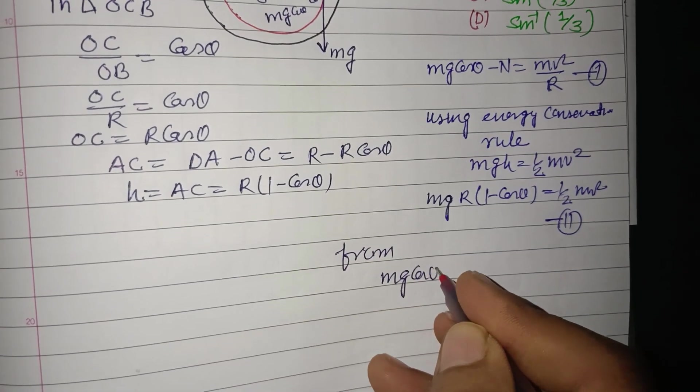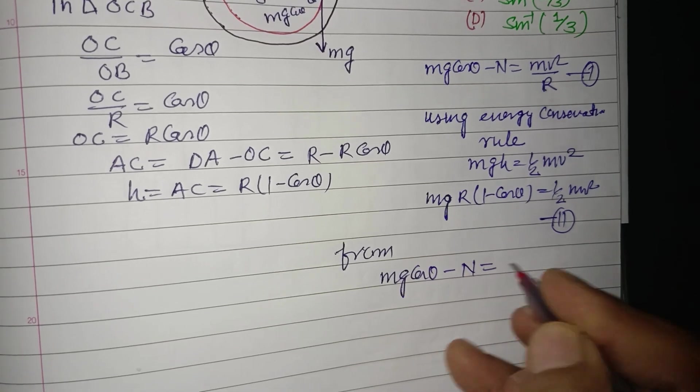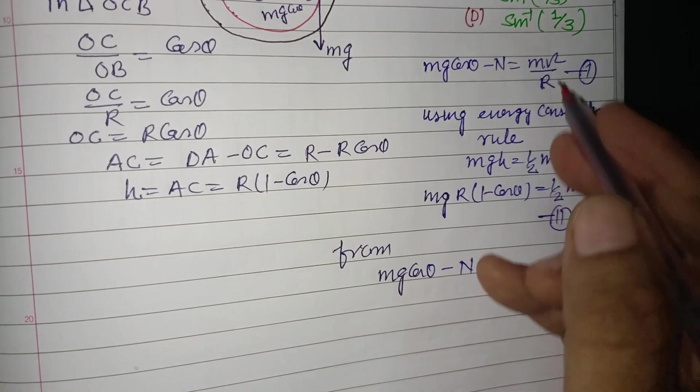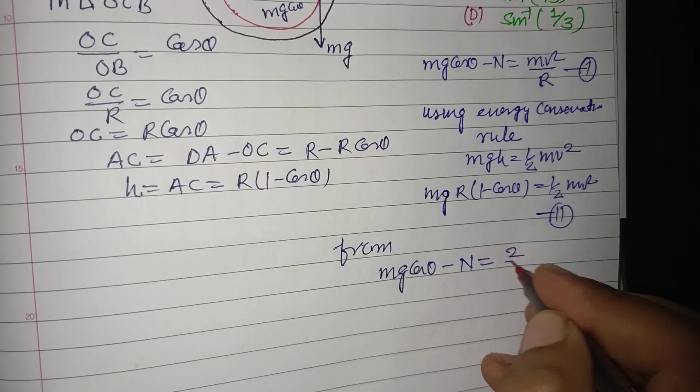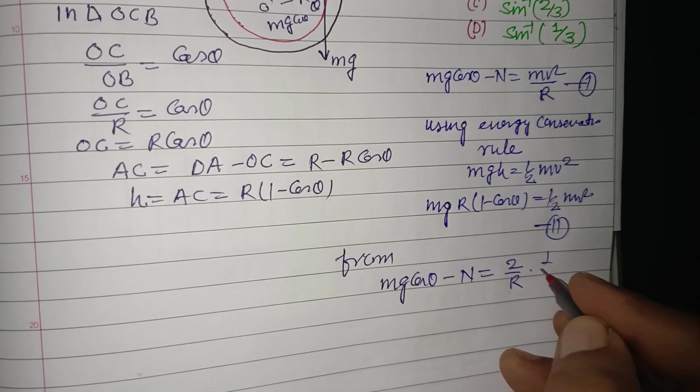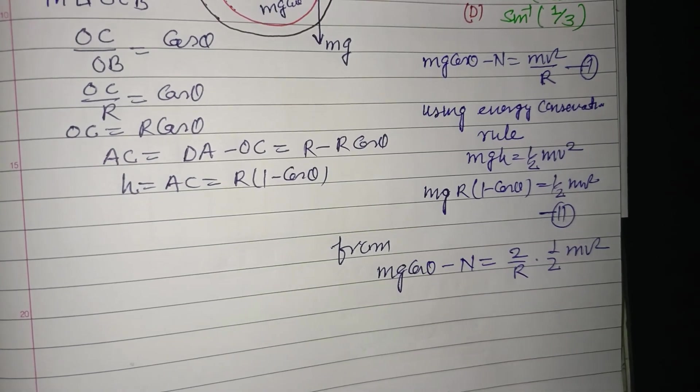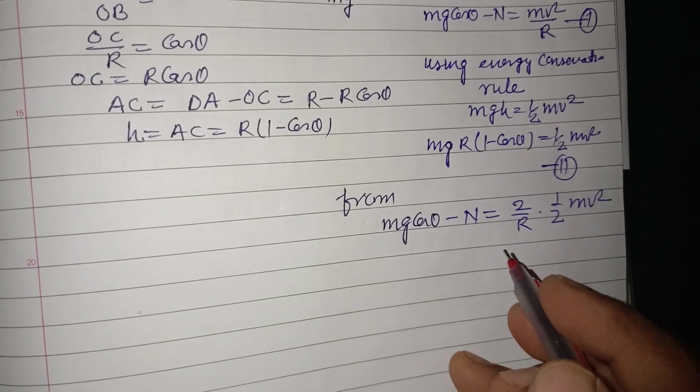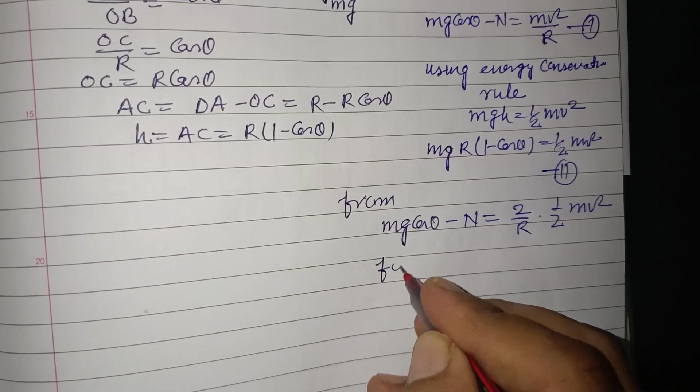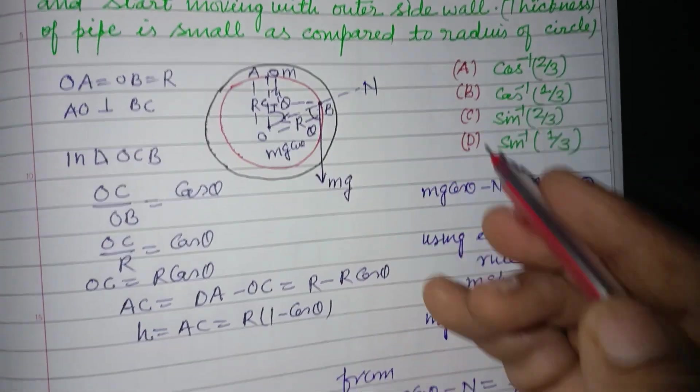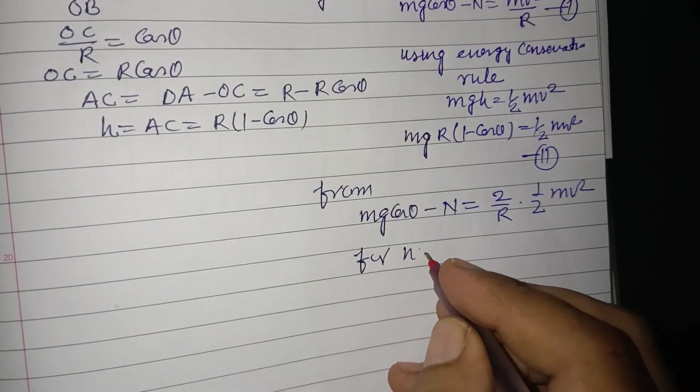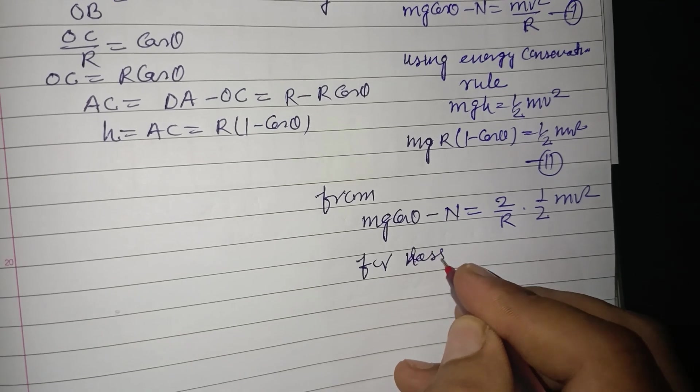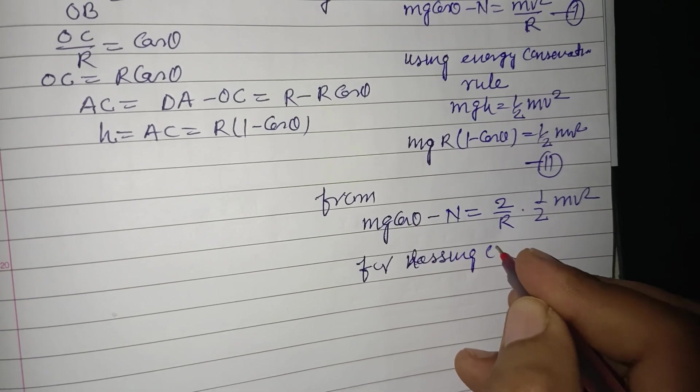mg cos theta minus N equals, we write m v squared upon R as 2 upon R into half of m v squared. For losing contact, for losing contact...